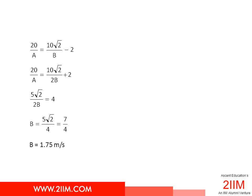Subtracting one from the other, we get 5 root 2 by 2B is 4 or B is 5 root 2 by 4, which is approximately 1.75 meters per second.